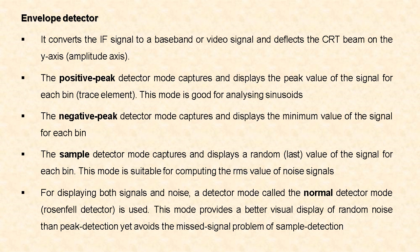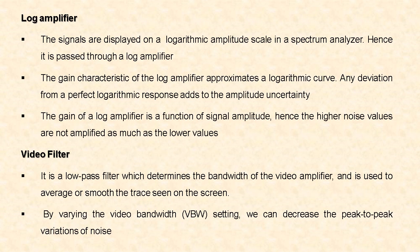Next, the log amplifier. Signals are displayed on a logarithmic amplitude scale in a spectrum analyzer and are passed to a log amplifier. The gain characteristics of the log amplifier approximate a logarithmic curve; any deviation from a perfect logarithmic response adds to amplitude uncertainty. The gain of this amplifier is a function of signal amplitude, so higher noise values are not amplified as much as lower values.